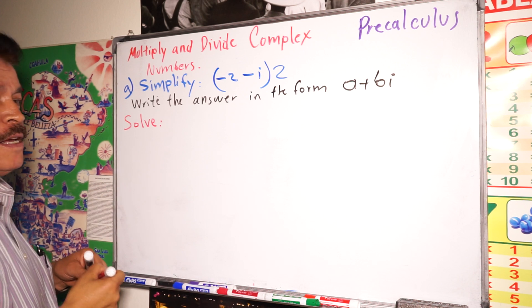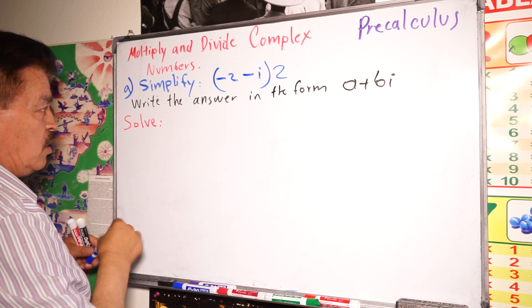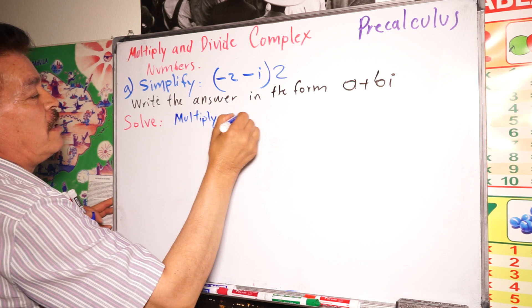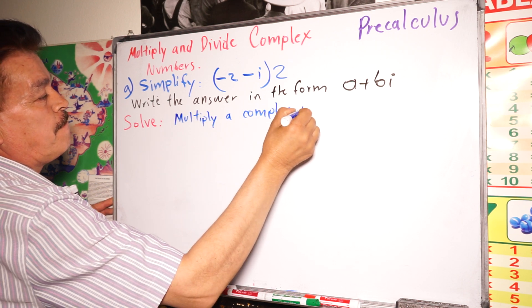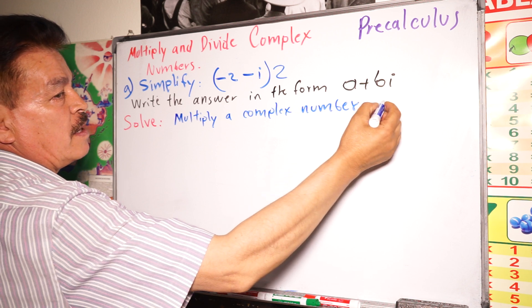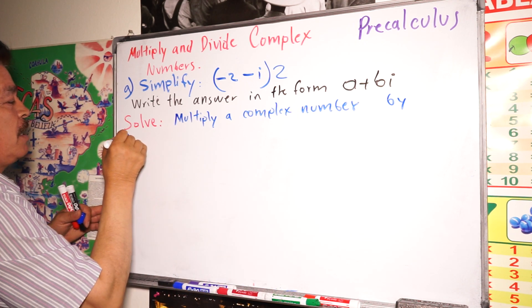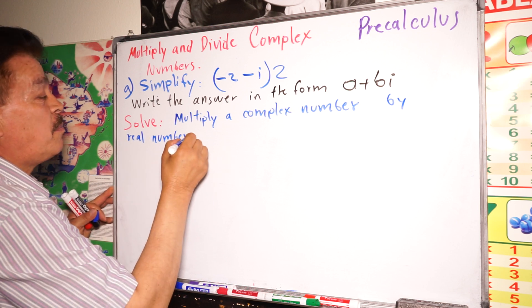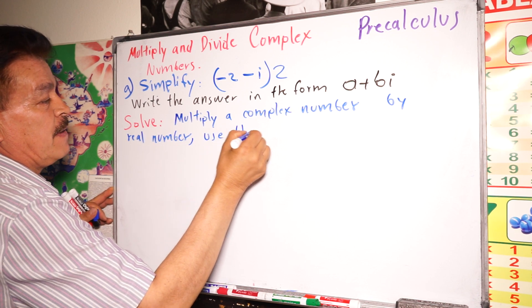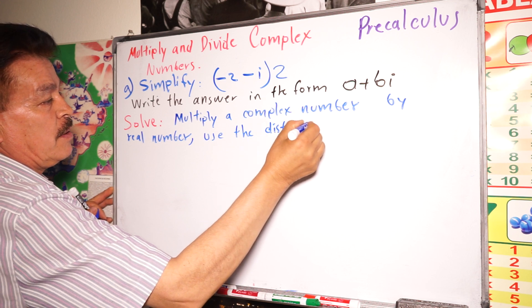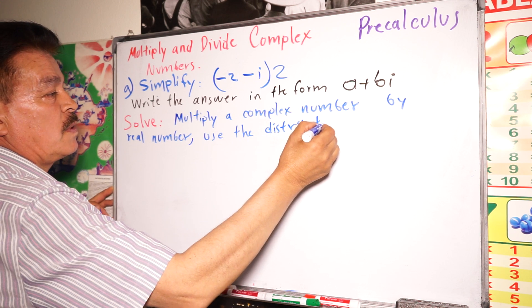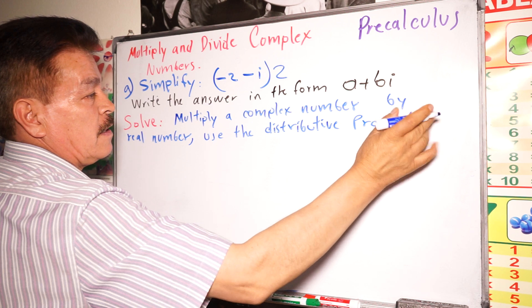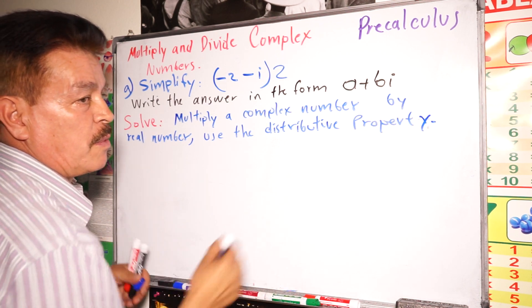This is multiplying a complex number by a real number. Use the distributive property.